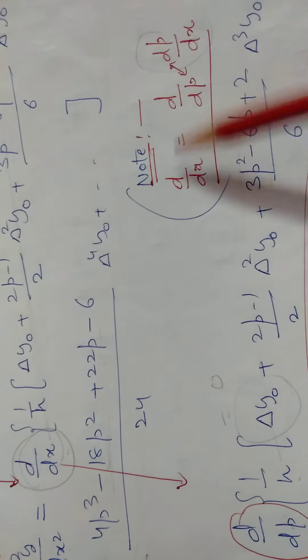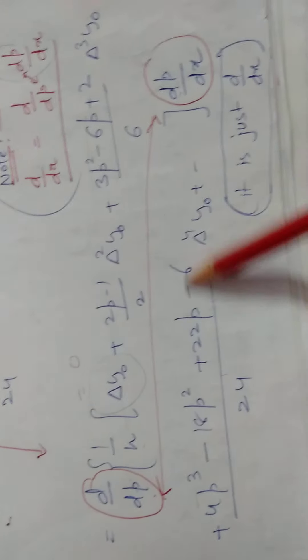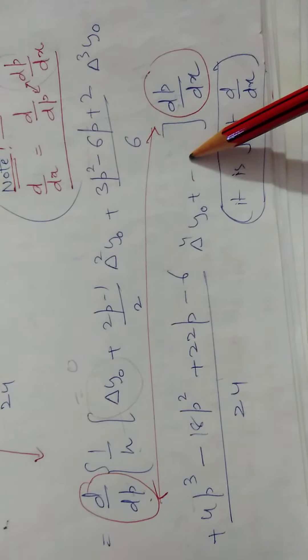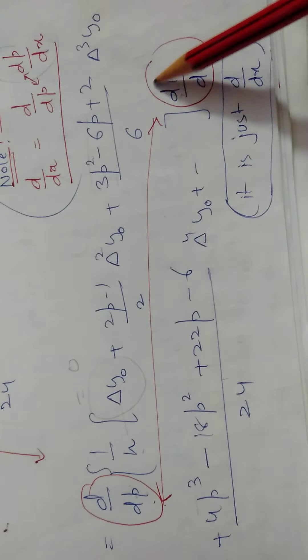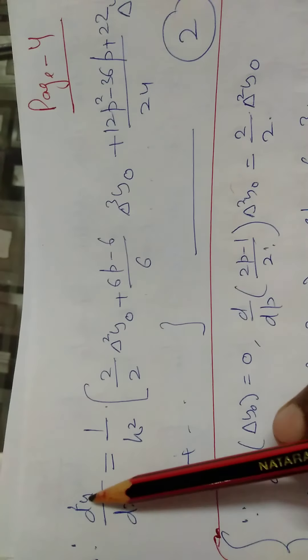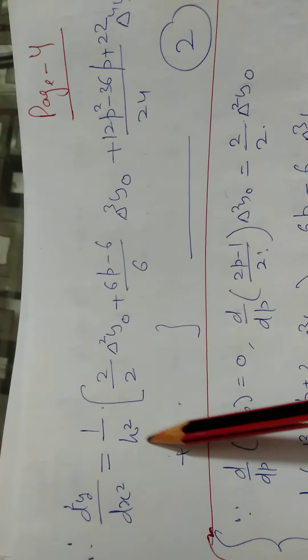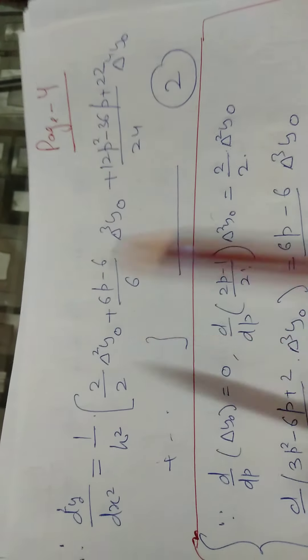This ddx we split using chain rule. ddx can be written as ddp times dp by dx. The value of dp by dx becomes one by h. So now the double derivative is one by h square. Now we perform the derivative with respect to p.